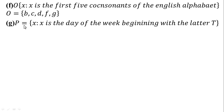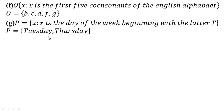In part G, F = {x : x is a day of the week beginning with the letter T}. We write the days whose beginning letter is T. So P = {Tuesday, Thursday}. These are the two days in a week beginning with the letter T. The answer for part G is P = {Tuesday, Thursday}.